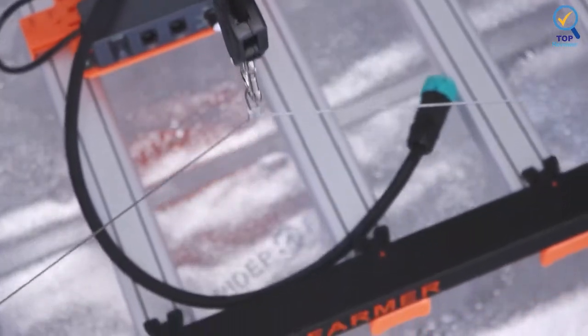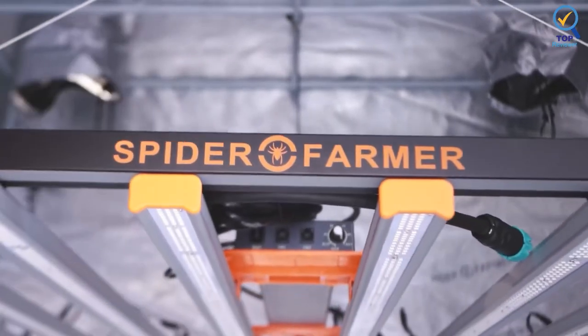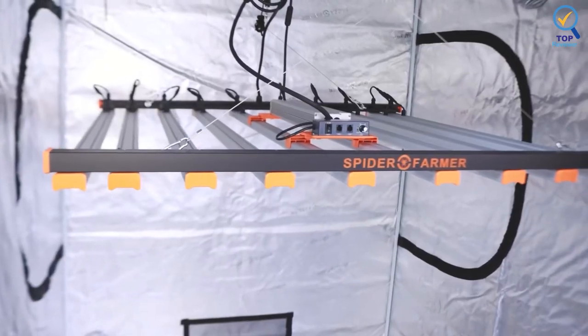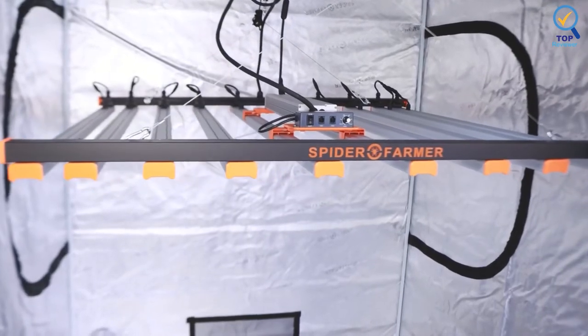Furthermore, the SE 1000W has an IP65 rating meaning the LEDs are waterproof. Remember, cannabis gardens can get humid, making waterproof lighting a must-have.